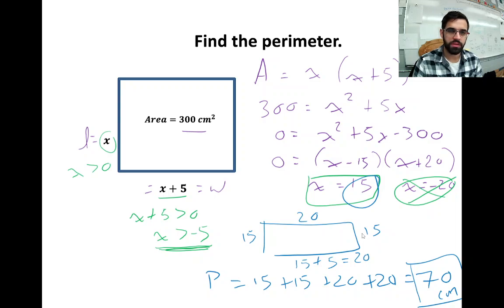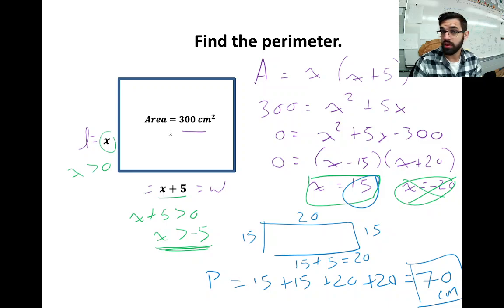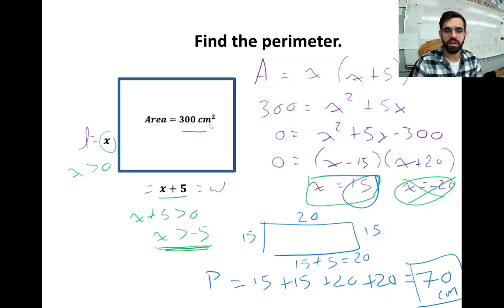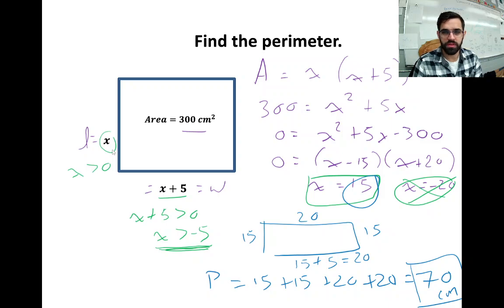This one says find the perimeter. We have a rectangle with a length of x and a width of x + 5, so the width is 5 units wider than it is long. The area of this rectangle is 300 cm². Can we find the perimeter? We could write an expression for the perimeter, and because we're given the area, we can solve for x by writing an area equation.